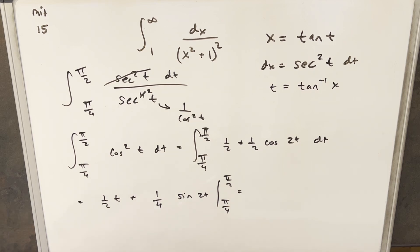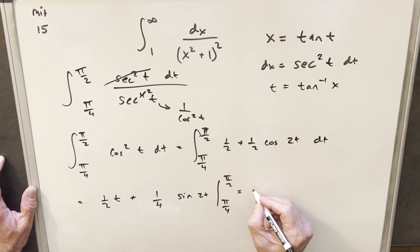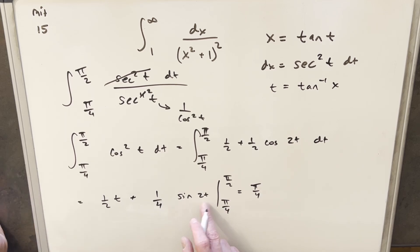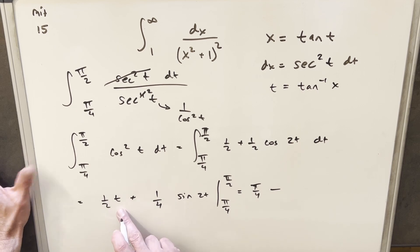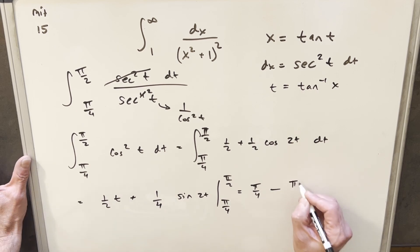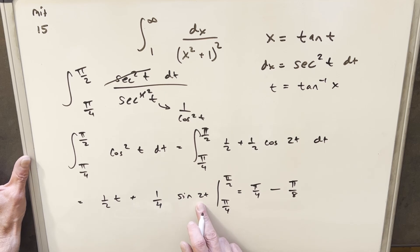Let's plug this in. π/2 times 1/2 here is going to be π/4. π/2 times 2 is π, sine of π is 0, so we'll skip that term. We'll move on to evaluating π/4. Then 1/2 times π/4 is going to be π/8.